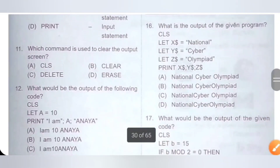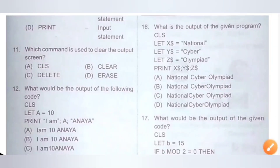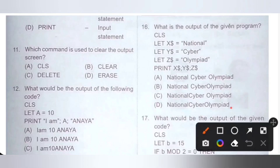Next, the achiever section. Sixteenth question: what is the output of the given program? CLS, LET X$ = "national", LET Y$ = "cyber", LET Z$ = "Olympia", PRINT X$; Y$; Z$. The semicolons print without any spaces, so the output will be nationalcyberOlympia. Option D is the correct answer.